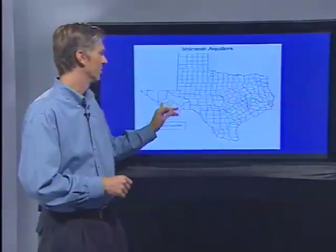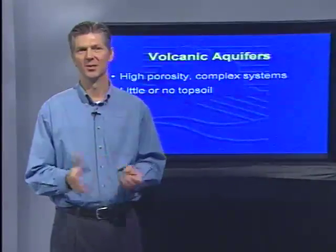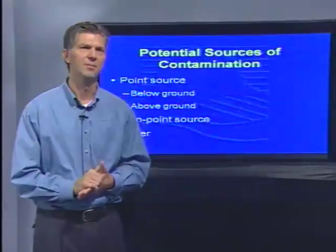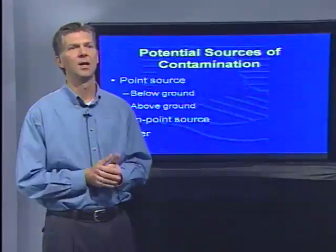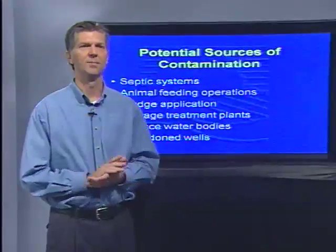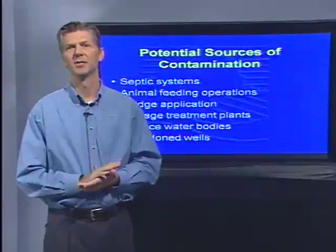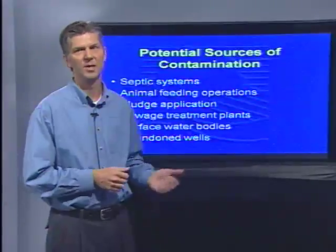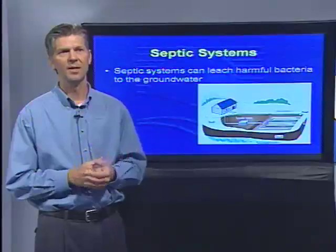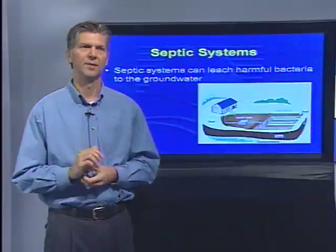Another group are volcanic aquifers located in West Texas — similar to other vulnerable aquifers, they have little or no topsoil and high porosity. Potential sources of contamination fall into two major groups: point source and nonpoint source, which can be below ground or above ground. Examples of potential sources of fecal contamination include septic systems, animal feeding operations, sludge applications, sewer lines, sewer treatment plants, and abandoned wells. Probably the most numerous sources are septic systems; many smaller and rural communities utilize them, and it's important they're properly maintained to prevent groundwater contamination.